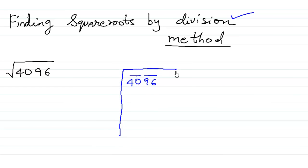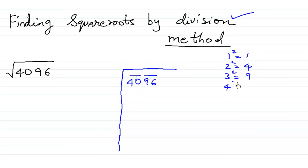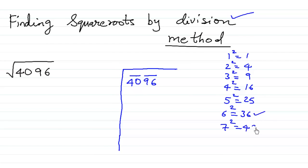We are going to draw the division shape, and starting with the number 40 we need to find a perfect square less than 40. For instance: 1²=1, 2²=4, 3²=9, 4²=16, 5²=25, 6²=36. This is just less than 40 because 7²=49. So we shall be using 6²=36, a perfect square which is just less than 40.